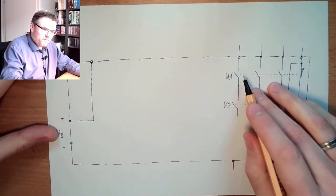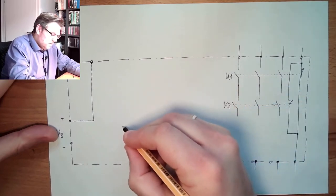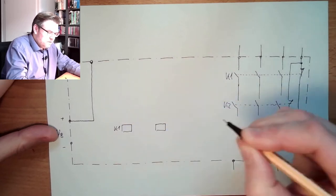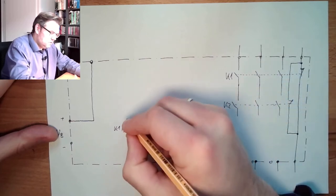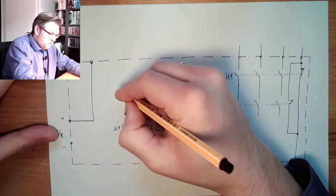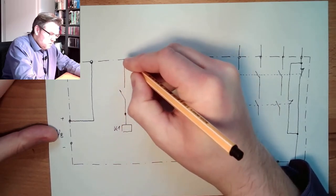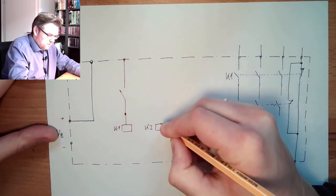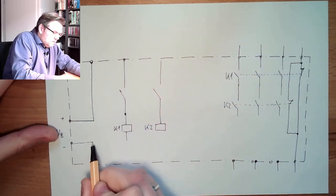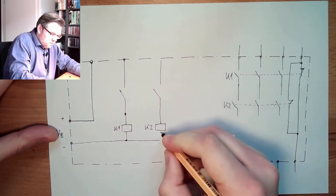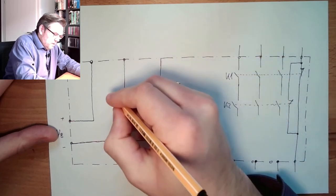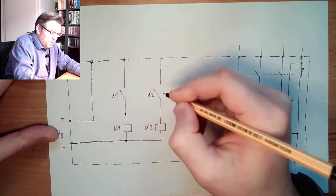And here inside I have my two contactors. So I have here somewhere my K1, the spool of my K1, and I have here somewhere my K2, the spool of my K2. Those two, they are connected here with minus, and here they hold themselves, K1 and K2.